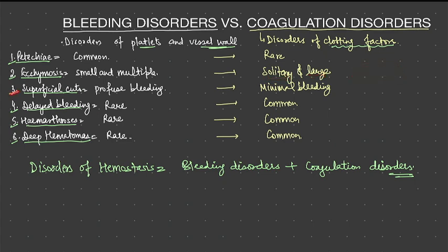Superficial cuts will cause profuse bleeding in bleeding disorders, because there is no platelet activation or platelet plug formation — there is a defect in platelet function. So the platelet plug itself will not form and bleeding will not stop once it starts. But in case of superficial cuts in coagulation disorders, there is minimal to no bleeding.